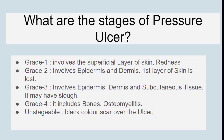What are the stages of pressure ulcer? There are a total of 4 stages. Stage 1 involves the superficial layer of skin; the sign is redness and the skin will be intact. Grade 2 involves the epidermis and dermis layer of the skin, and the first layer of skin is lost. Grade 3 involves epidermis, dermis, and subcutaneous tissue, and it may have slough. Grade 4 involves wounds and can lead to osteomyelitis. The last stage is unstageable pressure ulcer, where there will be black-colored eschar over the ulcer.